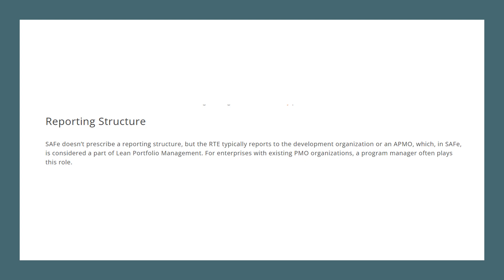Now let's understand the reporting structure for the Release Train Engineer. SAFe does not prescribe or recommend a specific reporting structure, but generally the Release Train Engineer reports to the development organization or an Agile Program Management Office, which is part of Lean Portfolio Management. For enterprises with an existing PMO organization, a program manager often plays this equivalent role of Release Train Engineer.